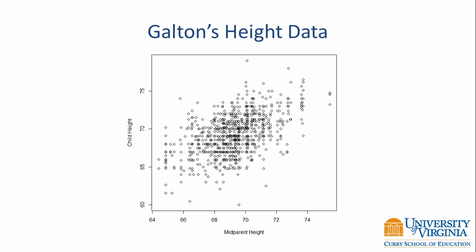Here you see a scatter plot of Galton's height data. On the x-axis, we have the mid-parent height, which is the average of the parent's height. On the y-axis, we have the child's height. This plot includes both men and women, and Galton applied an adjustment to female height by multiplying it by 1.08, so he included them all in the same plot. You can see that the points follow somewhat of a positive trend, pointing upward from left to right, and they are fairly tightly grouped, indicating perhaps a moderate correlation.